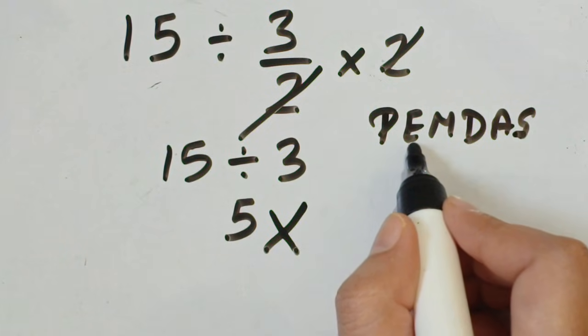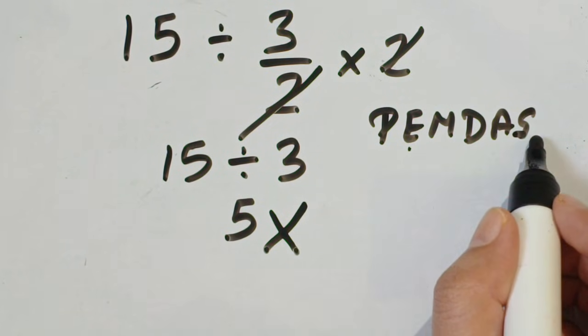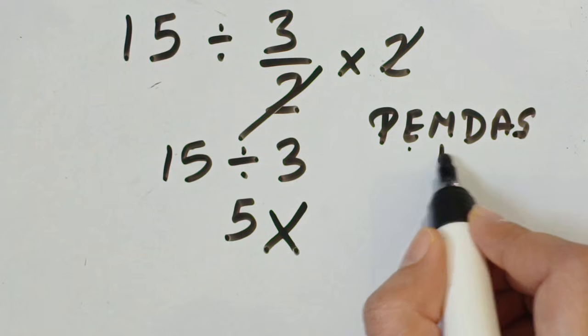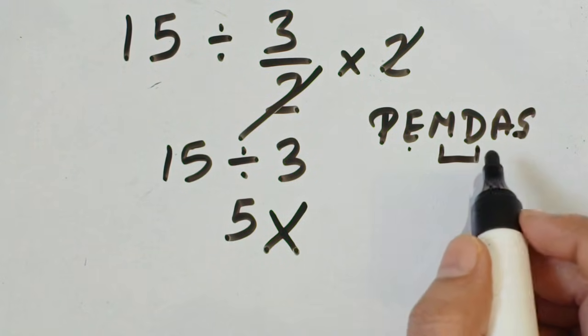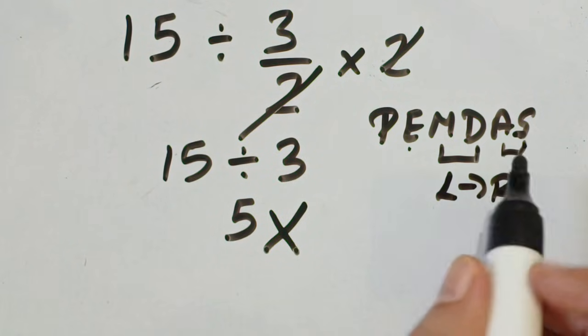The order of operations is PEMDAS: P stands for parenthesis, E exponent, M multiplication, D division, A addition, S subtraction. You have to remember that multiplication and division both have equal priorities, therefore go from left to right. Same for addition and subtraction.